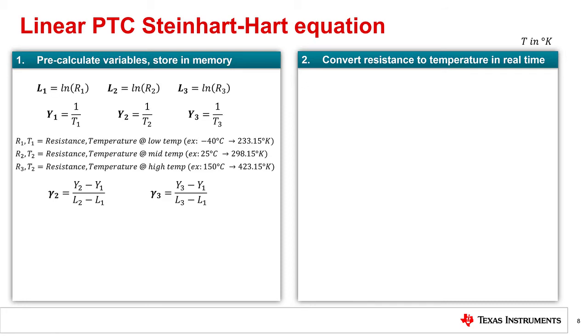Using the lookup table provided by the manufacturer, you can calculate L1, 2, and 3 as well as Y1, 2, and 3. Keep in mind, this linear PTC version of the Steinhart-Hart equation uses temperature in degrees Kelvin, so you need to convert from Celsius to Kelvin first. In order to accurately characterize the resistance to temperature curve, you need to pick three points across temperature.